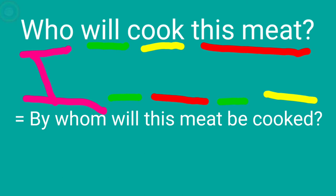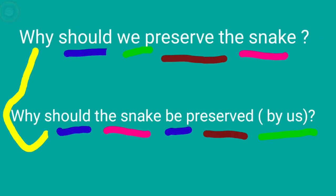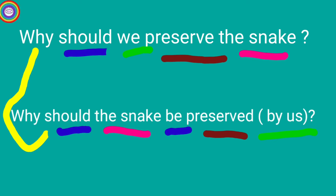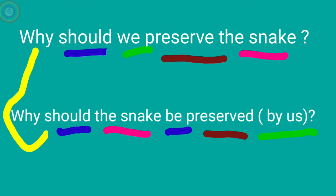Next: 'Why should we preserve the snake?' For a 'why' question, add 'why' at the beginning, then the auxiliary 'should', then the subject 'the snake'. Since there is 'should', we add 'be' plus V3. 'Preserve' changes to 'preserved', and the subject 'we' goes to 'by us'. Result: 'Why should the snake be preserved by us?' The changes are shown in colored lines.